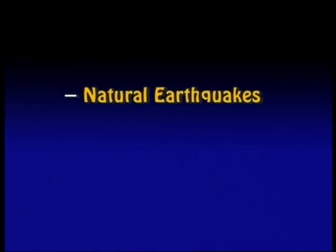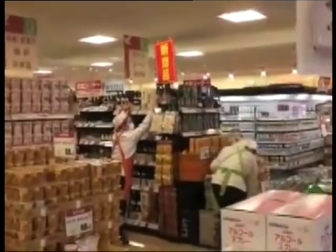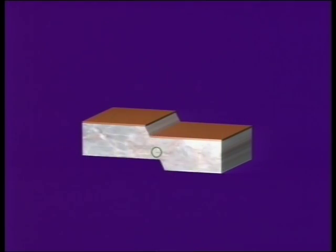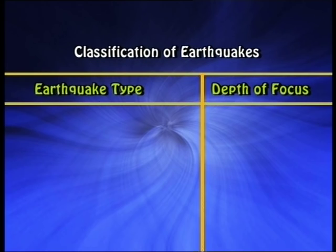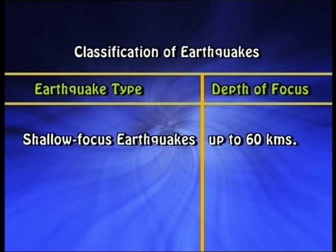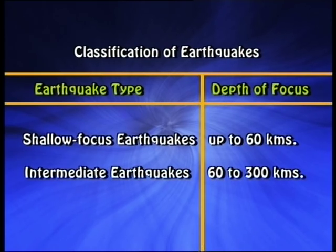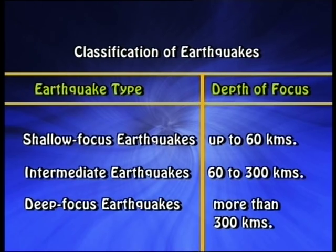Classification of earthquakes: earthquakes are broadly classified into two categories — natural earthquakes and man-made earthquakes. The majority of earthquakes are natural and disastrous, resulting from the sudden movement of rocks within the earth along faults, also known as tectonic earthquakes. The point within the earth where rupture begins and energy is released in the form of seismic waves is called the focus or hypocenter. Depending upon the depth of focus, three classes of earthquakes are recognized: shallow focus earthquakes (depth up to 60 km), intermediate earthquakes (depth between 60 and 300 km), and deep focus earthquakes (depth of more than 300 km).